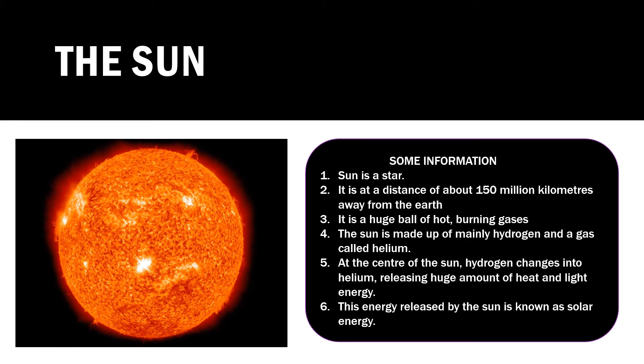It is a huge ball of hot burning gases. The sun is made of mainly hydrogen and a gas called helium. At the center of the sun, in the core, the hydrogen gas is continually changing into helium, releasing huge amounts of heat and light energy. This energy released by the sun is known as solar energy.